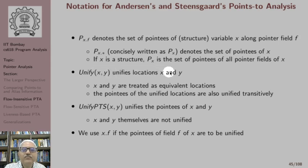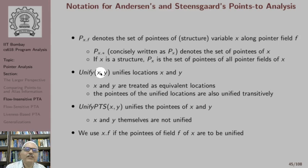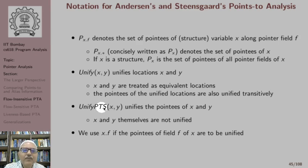The operation unify(x, y) unifies locations x and y, where x and y are pointers treated as equivalent locations. This means the pointees of unified locations are also unified transitively — we add pointees of x to the pointee set of y and vice versa, then unify all pointees of x and y. The operation unify_pts(x, y) does not unify x and y themselves but unifies the pointees of x and y. We use x.f when the pointees of field f of x are to be unified.